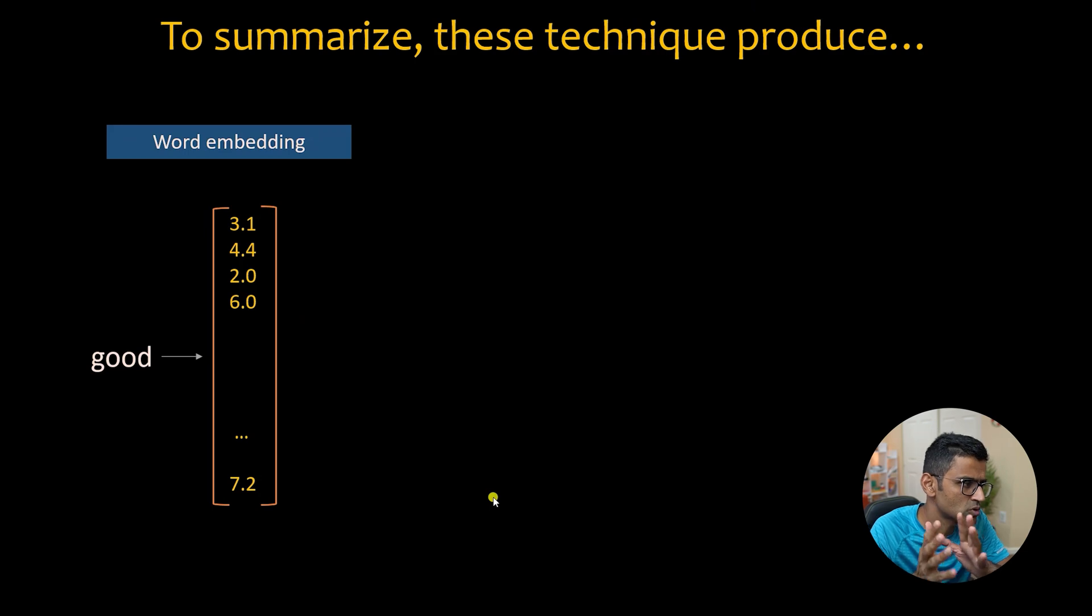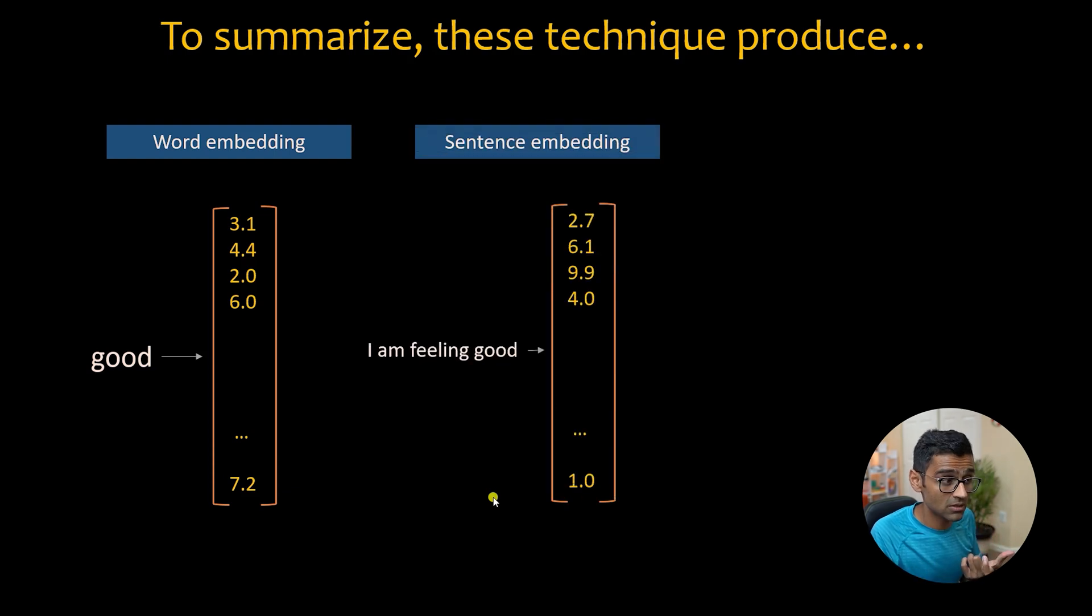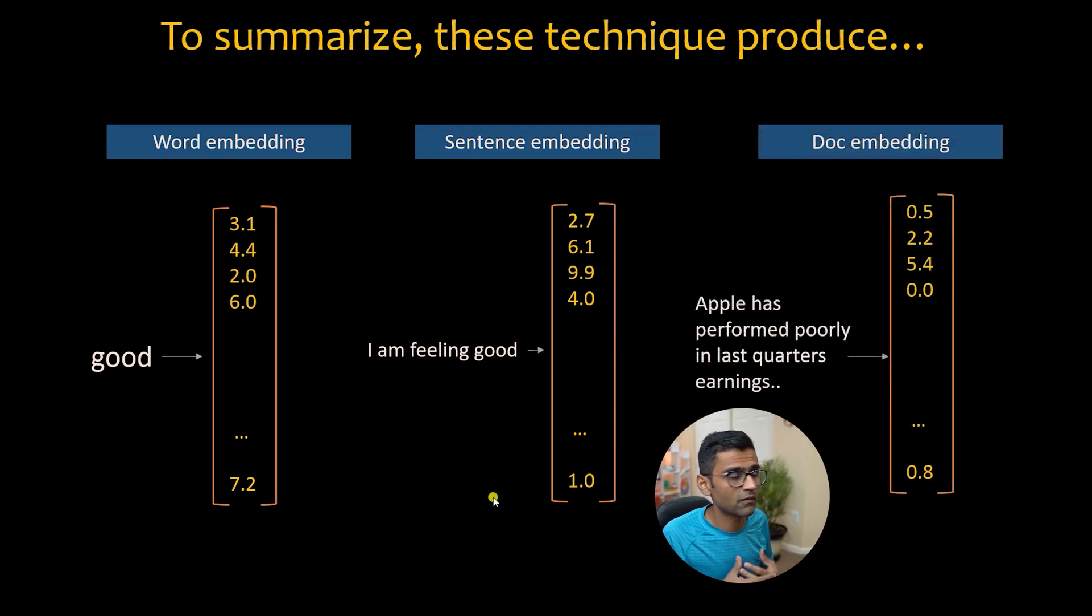But just to summarize what these techniques produce - see folks it's very simple. The whole purpose of these techniques is to convert word into a vector because we have seen previously machine learning models don't understand text. They need numbers. So you can convert a single word such as good to a vector. You can convert entire sentence to a vector and that is called sentence embedding. Or you can convert the entire paragraph or a news article or a document into a vector. So in the future video we will be writing code and we'll be using these techniques to solve the actual NLP problems.